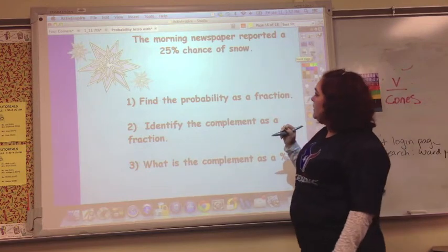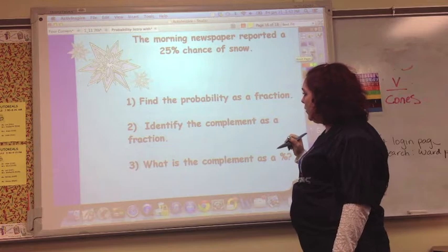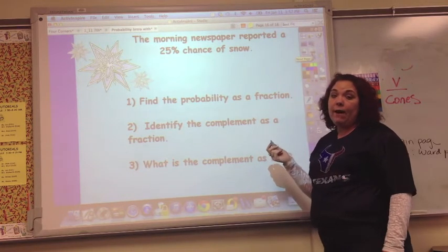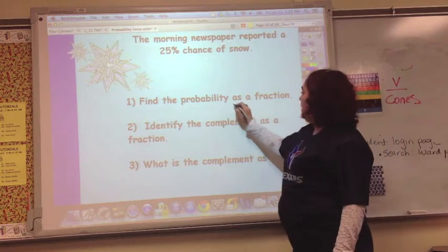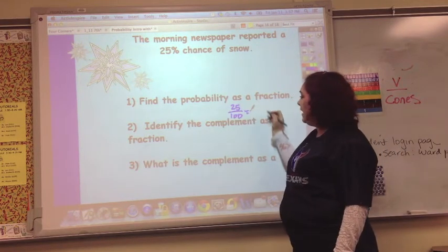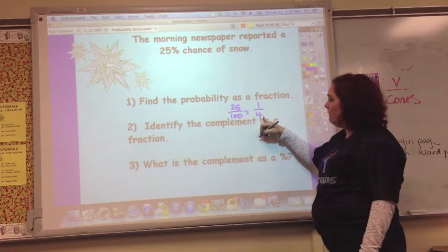So the morning newspaper reported a 25% chance of snow. Find the probability as a fraction. Well, 25% would be 25 out of 100. Simplify that. Divide by 25, divide by 25. One-fourth. One out of four.